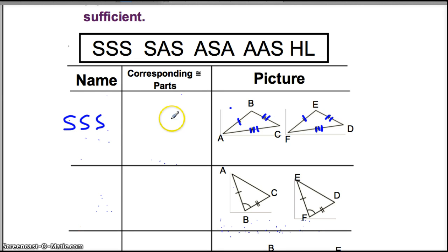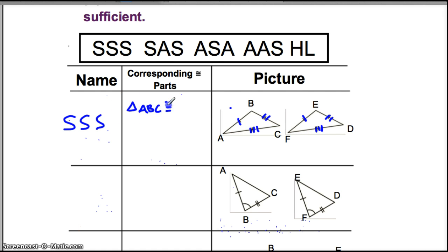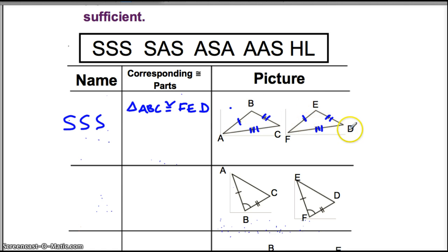The next part of this is naming these triangles and saying that they're congruent — and we don't do it randomly. Remember, we have to put them in the same order. So when I say that triangle ABC is congruent to another triangle, AB has to be in the same position as FE. So I have to go FE here, and then D. So ABC is the same as FED.